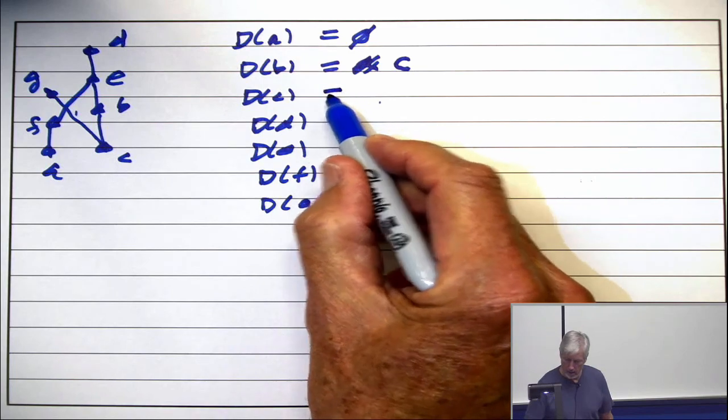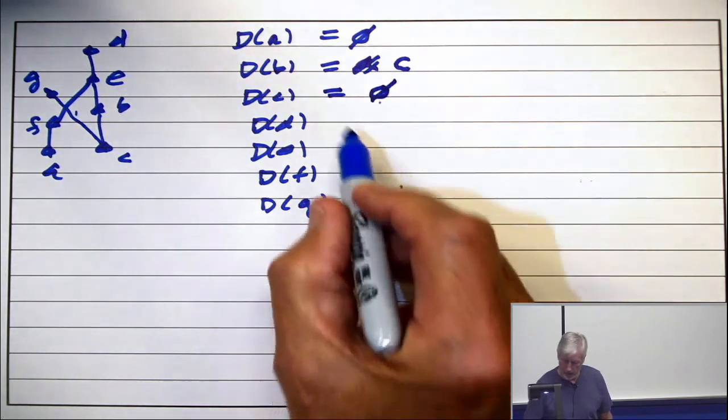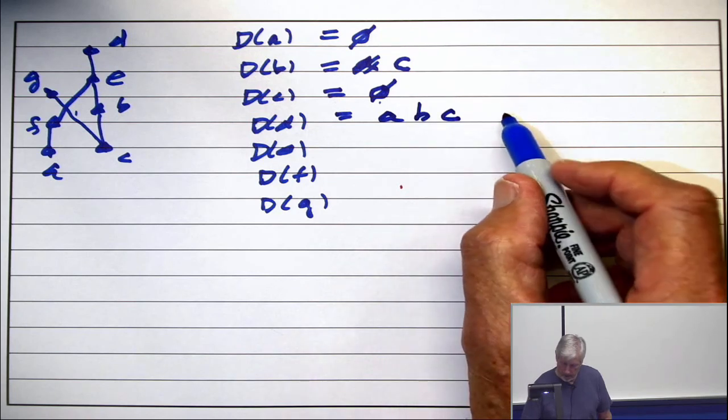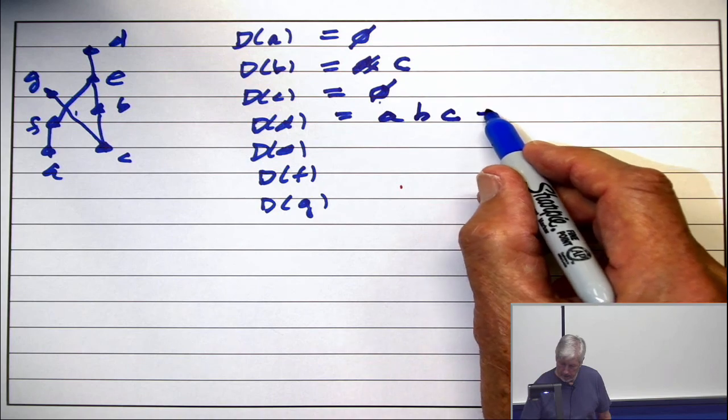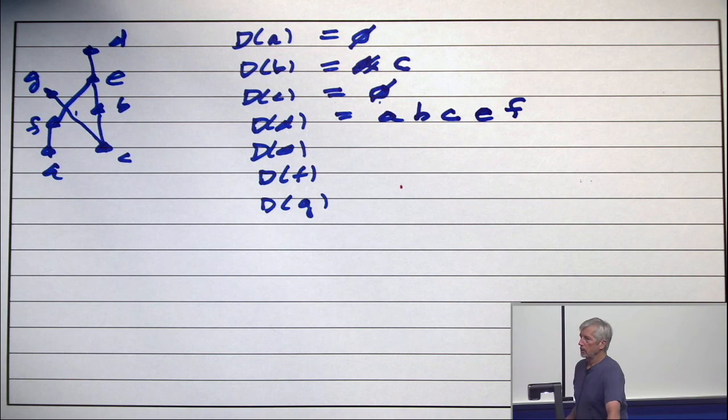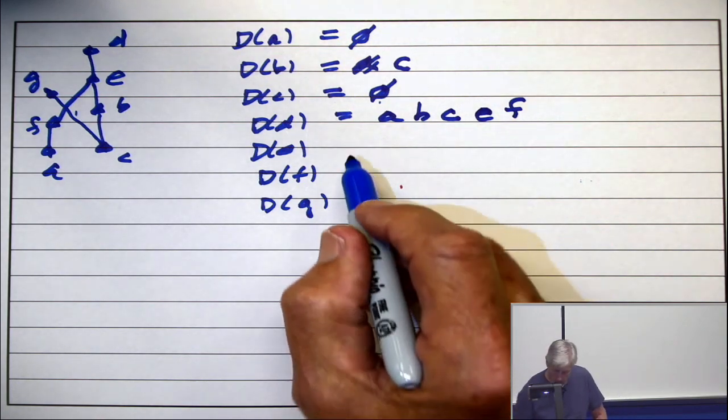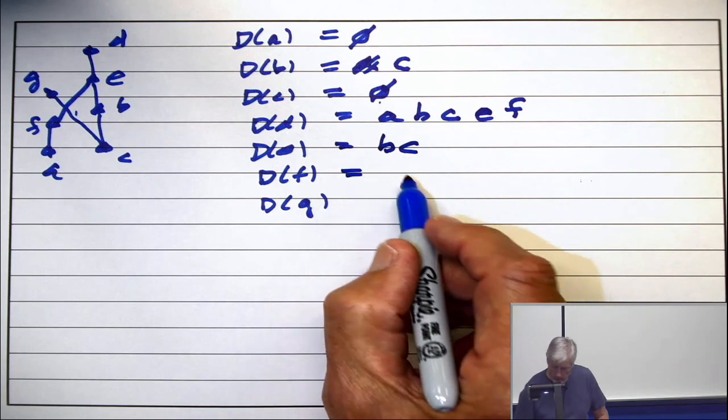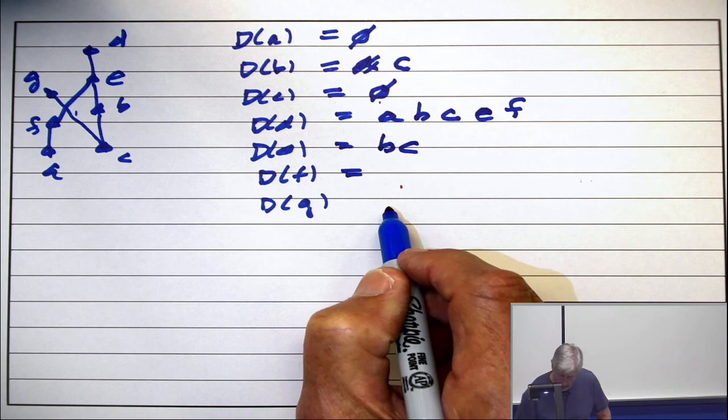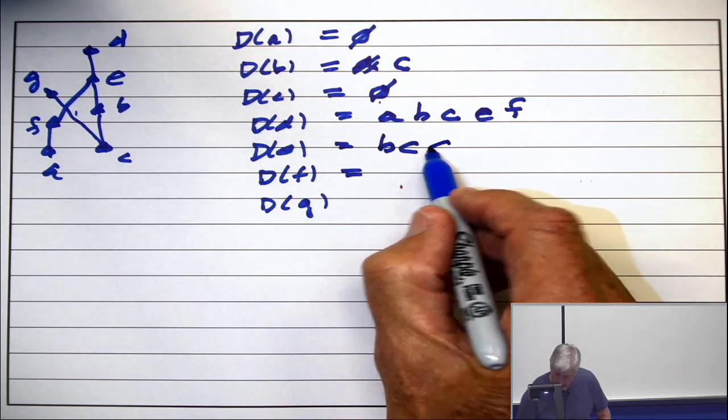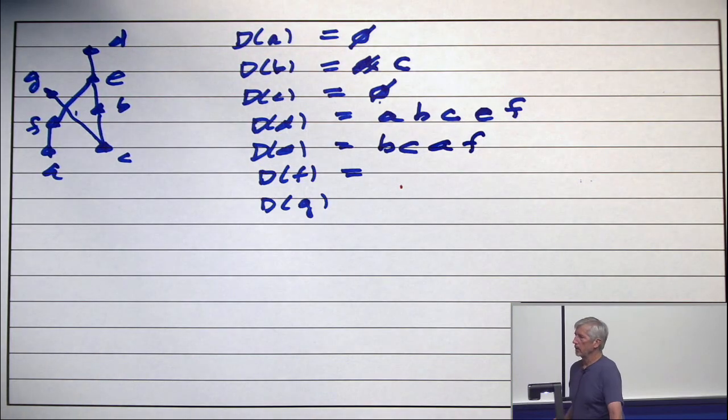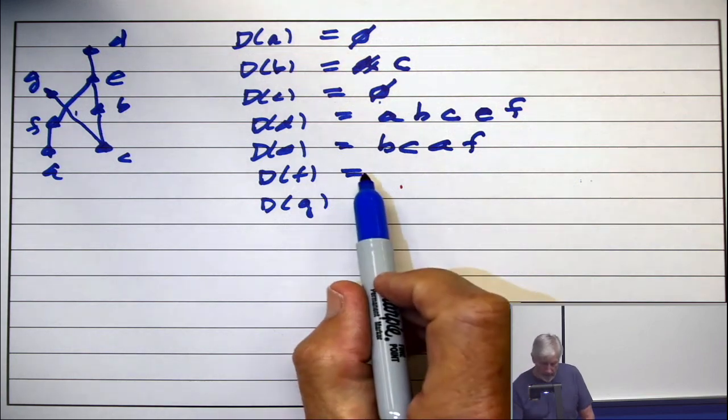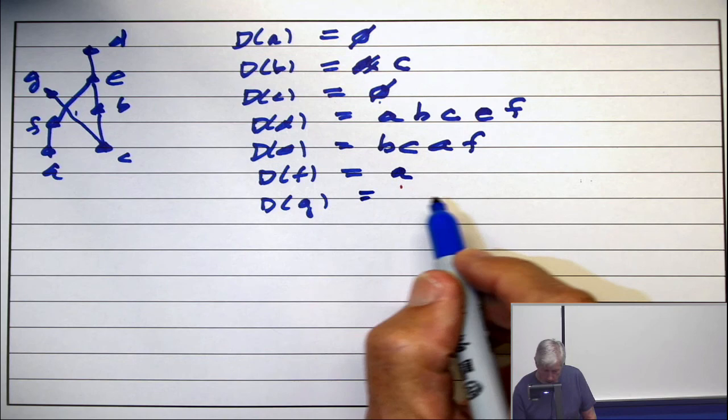What's down from C? Empty set. Down from D? A, B, C, not D, E, and F. Did I get it right? This is just a set, so it doesn't matter the order. What's down from E? B and C? What's down from F? Oh, down from E is B, C, A, and F. The order is not important. This is just a set. And I'm being selectively lazy. I'm not drawing the squiggles or the commas. But I'm talking about a set. Down from F? A. Down from G? C. Okay.